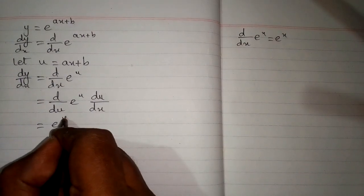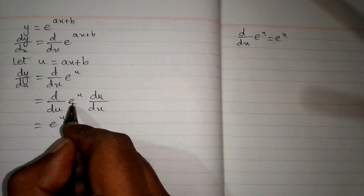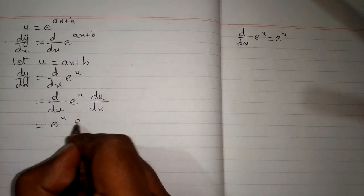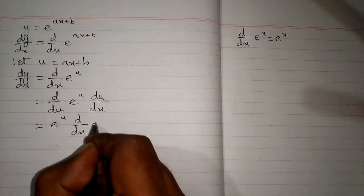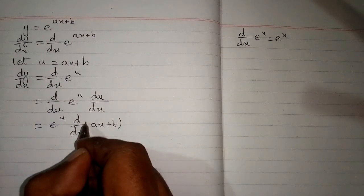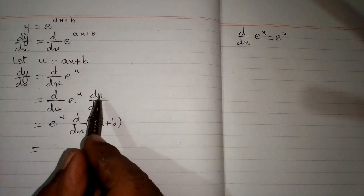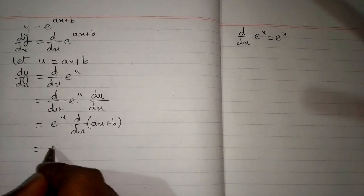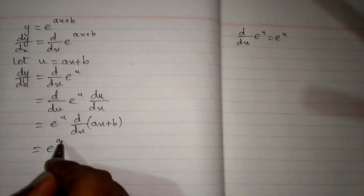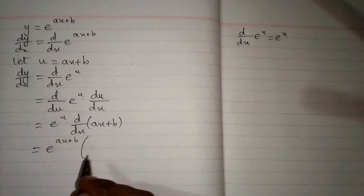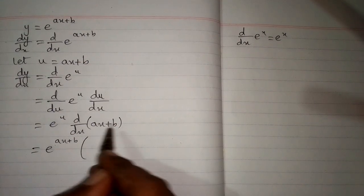Now we have e to the power u, because the derivative of e to the power u is e to the power u, and then the derivative of ax plus b. We put the value of u over here. Now again we put the value of u which is ax plus b and apply derivative on both terms.